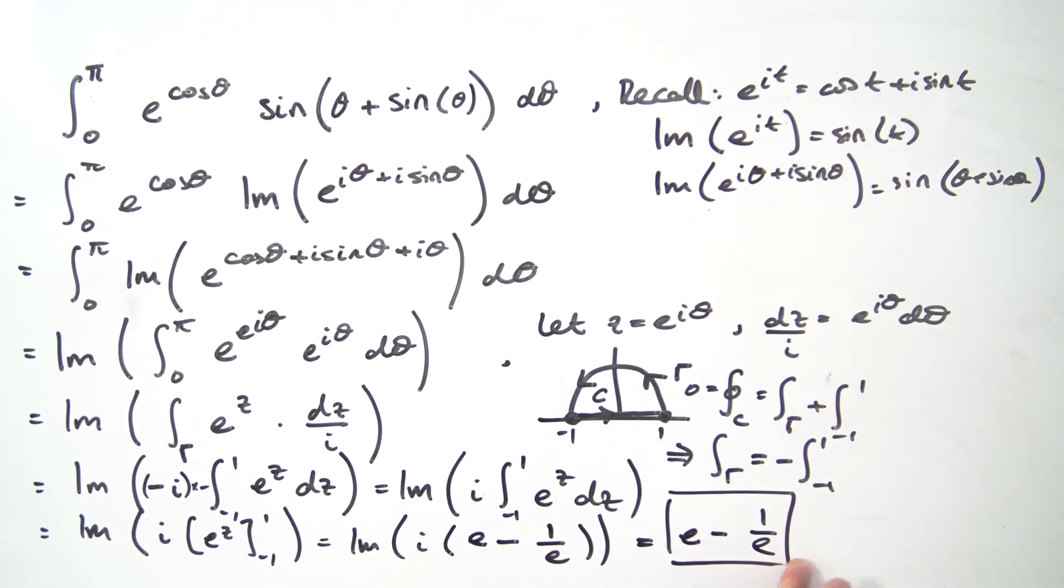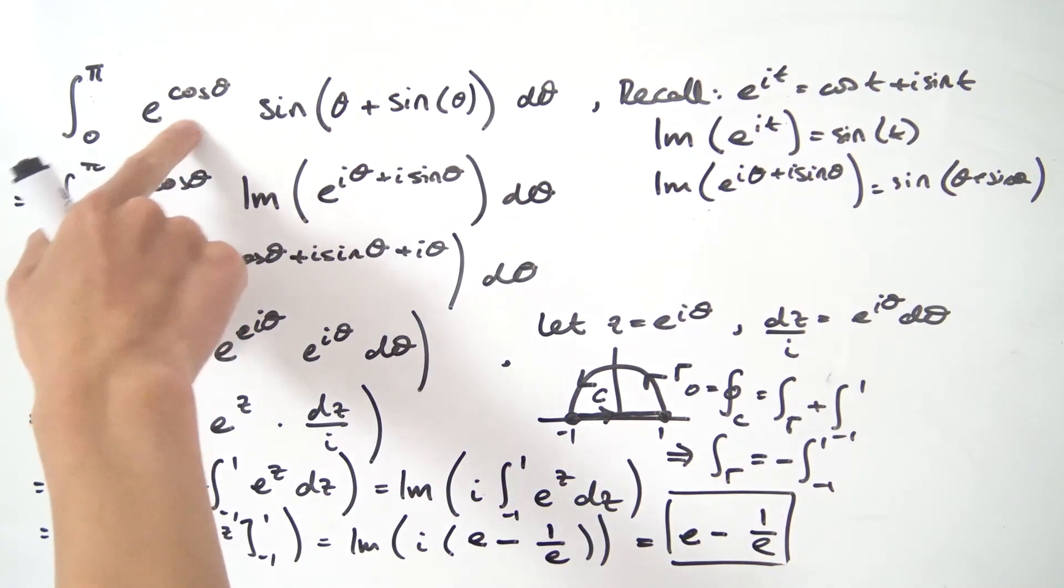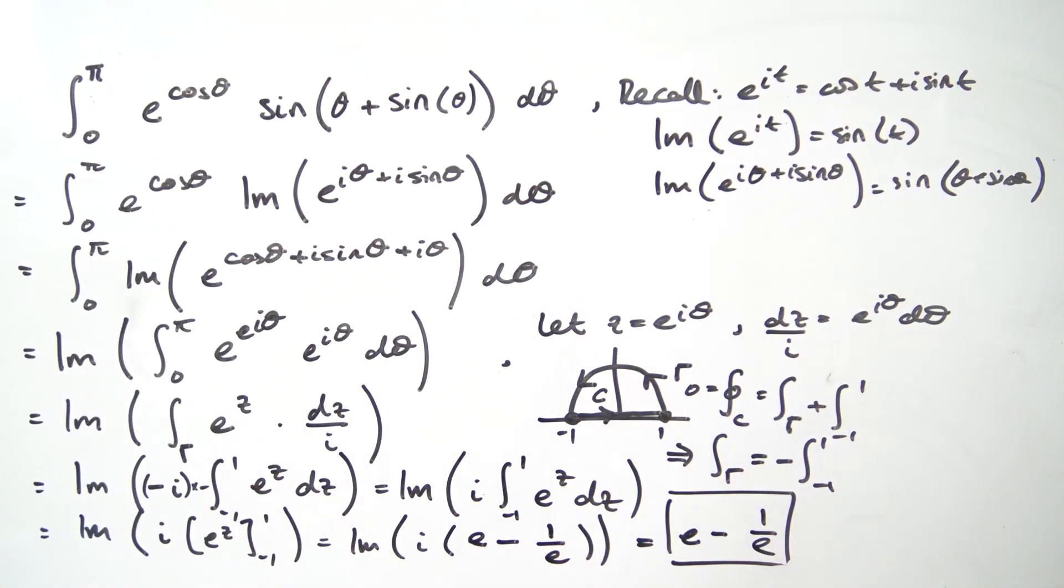So this is a bit of a surprising answer actually, because with an integral involving cosines and sines and whatnot, you would expect an answer with pi in it, just like the last video, but this answer only has e's in it, which is a bit interesting. But yeah, that's basically all for this video.